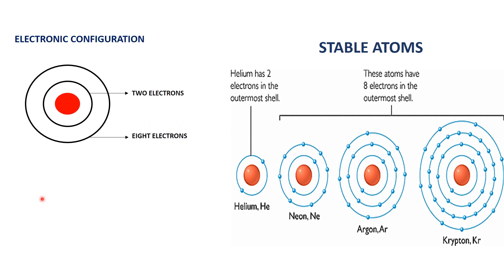Hello students. In the previous lesson, we had discussed about electronic configuration. Electronic configuration is the arrangement of electrons in an atom. We had discussed that the first shell of an atom can hold up to two electrons, and the second shell of an atom can hold up to eight electrons.